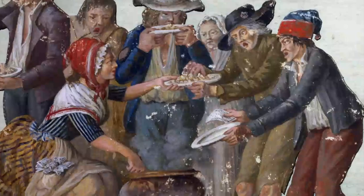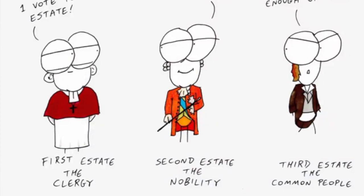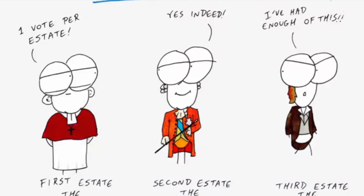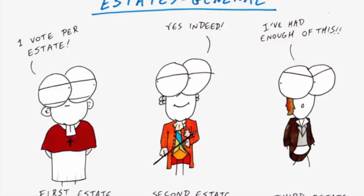France continued to operate under an old political system known as the Estates General. This body met with the king to raise taxes. Here, power was split between three estates or groups. The first estate was made of clergy members, leaders of the Catholic Church. The second estate was made of wealthy nobles. And the third estate was made up of everyone else — 95% of the French population.